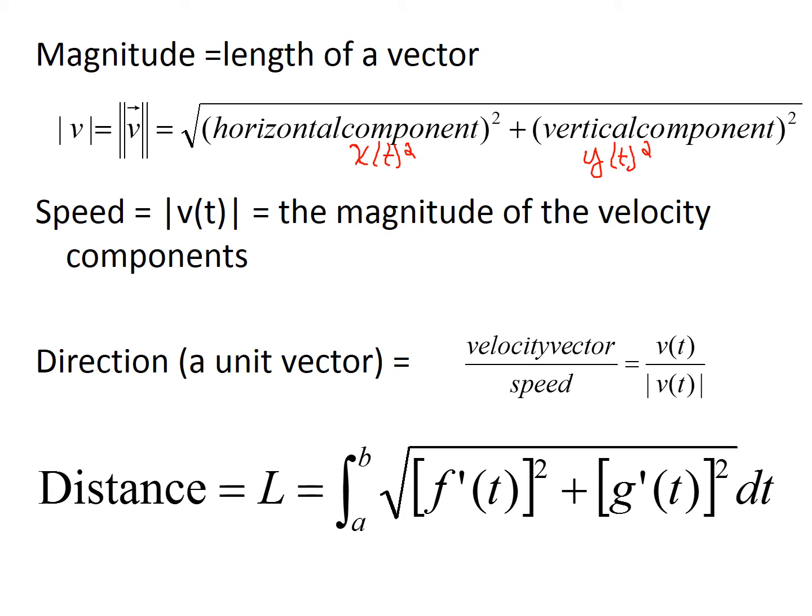We don't use direction a lot, but if we did, direction is the velocity vector over the speed. You probably use that more in physics. The length is the distance. The total distance traveled of a parametric equation is given by the arc length formula. That's how you would find the total distance traveled if it's given in parametric form.